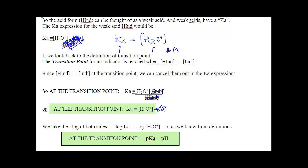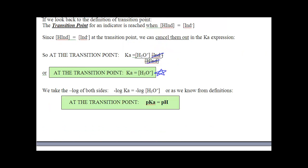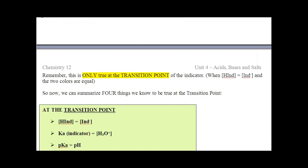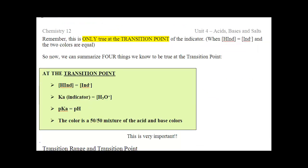We're going to do that calculation in class tomorrow. Make sure you understand that indicators are equilibrium mixtures of weak acids and conjugate bases with different colors. You can shift that equilibrium left and right, and that is what changes the color you see. That's the end of this section, ladies and gentlemen — we'll see everyone tomorrow.